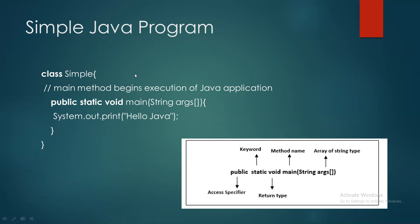یہ ہمارا first program ہے، class کا نام 'Simple' رکھا ہے۔ آپ کوئی بھی نام رکھ سکتے ہیں — نام میں space نہیں آنی چاہیے، dot نہیں آنا چاہیے، کوئی special character نہیں رکھتے، ایسا reasonable نام رکھیں جو easily سمجھ آ سکے۔ Double slash کے ساتھ جو لکھا ہے وہ comment ہے — 'main method begins execution of java application' — یہ program کے code کا part نہیں ہے اور execution میں کوئی effect نہیں ہوگا۔